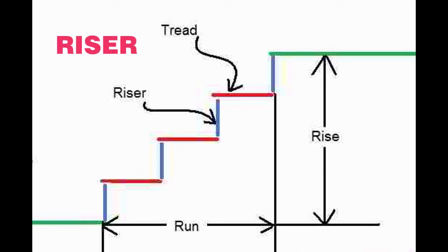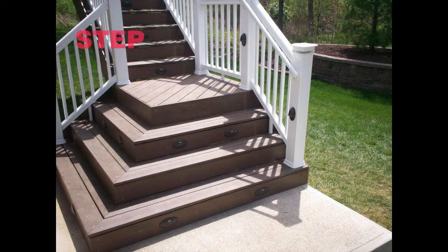The vertical member of the step is known as riser. It is used to support and connect successive treads. The vertical height between two successive treads is called a rise. A step is a combination of tread and riser which permits our movement up and down from one place to another.